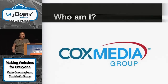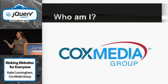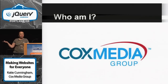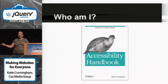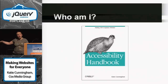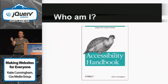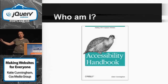My name is Katie Cunningham. I am a Python and Django developer for Cox Media Group, and I'm also an author for Pearson and O'Reilly. I wrote this book last year — it came out in August. It's a very thin book, so if you want to read more about accessibility, you can get through it in an afternoon.